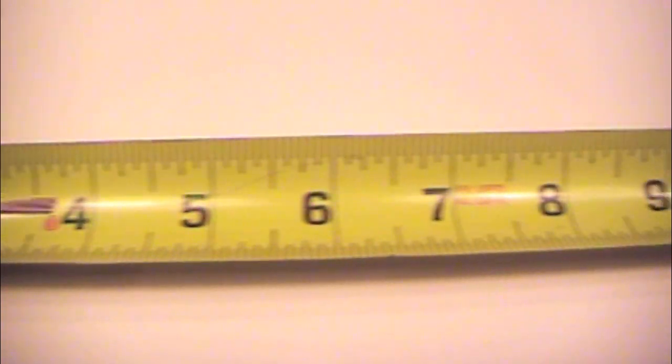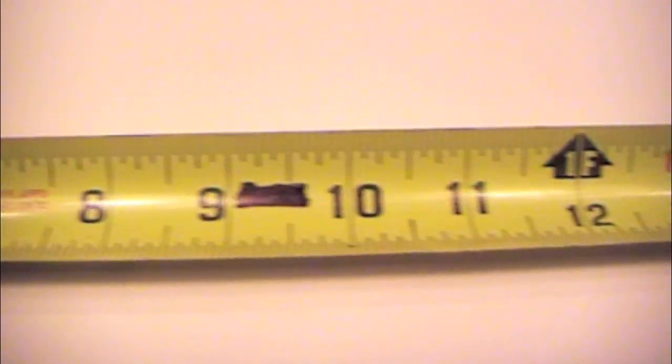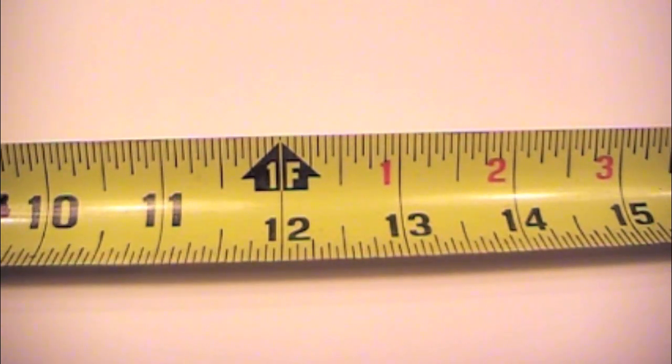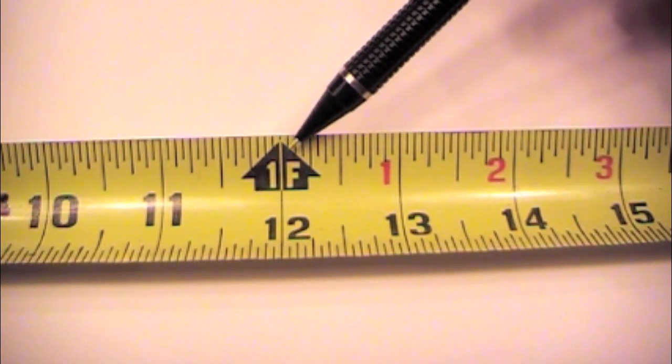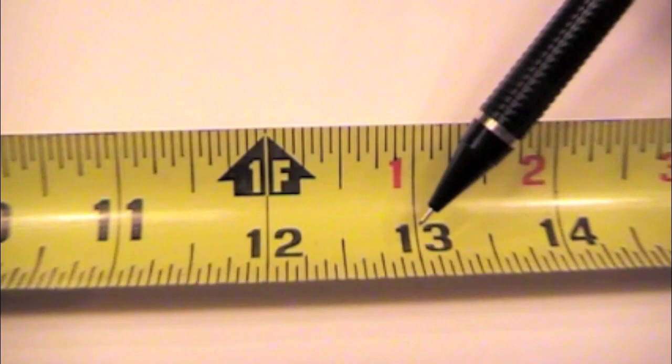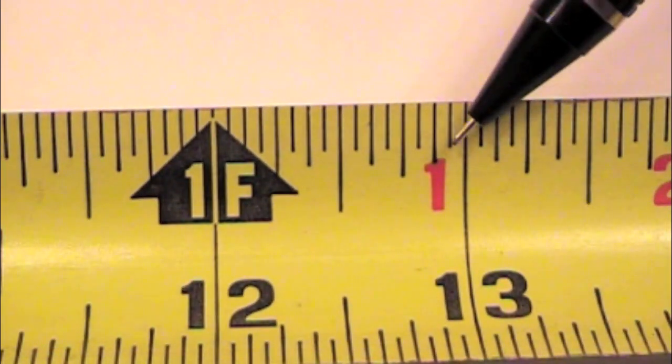When we extend it up to a foot, twelve inches, we see that we have a second set of numbers show up. We have twelve inches, which is also a foot, and we have thirteen inches, and then we also have a one inch.